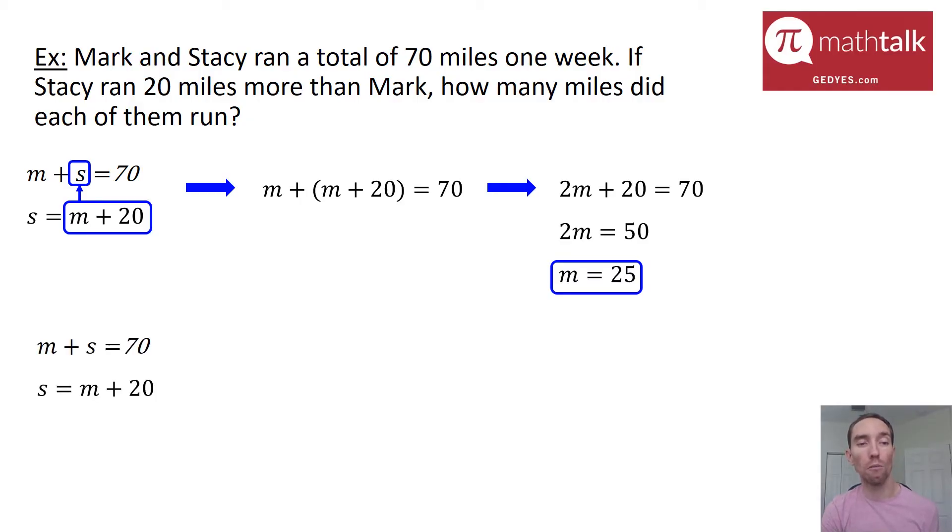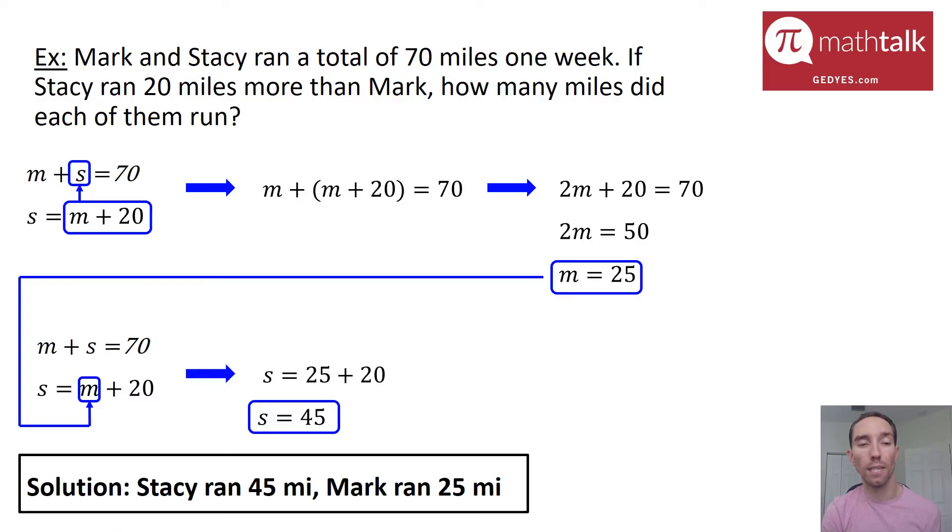Now I'm going to go ahead and plug it into M in one of my equations. I'm using the second one because I know that if I plug in 25 for M, I get S equals 25 plus 20, which is going to be 45 miles. So now I have the answer for both variables. Stacy ran 45 miles and Mark ran 25 miles. I can do a quick check. 45 plus 25 equals 70, which is the total mileage. And 45 is 20 miles more than 25. So it checks out.